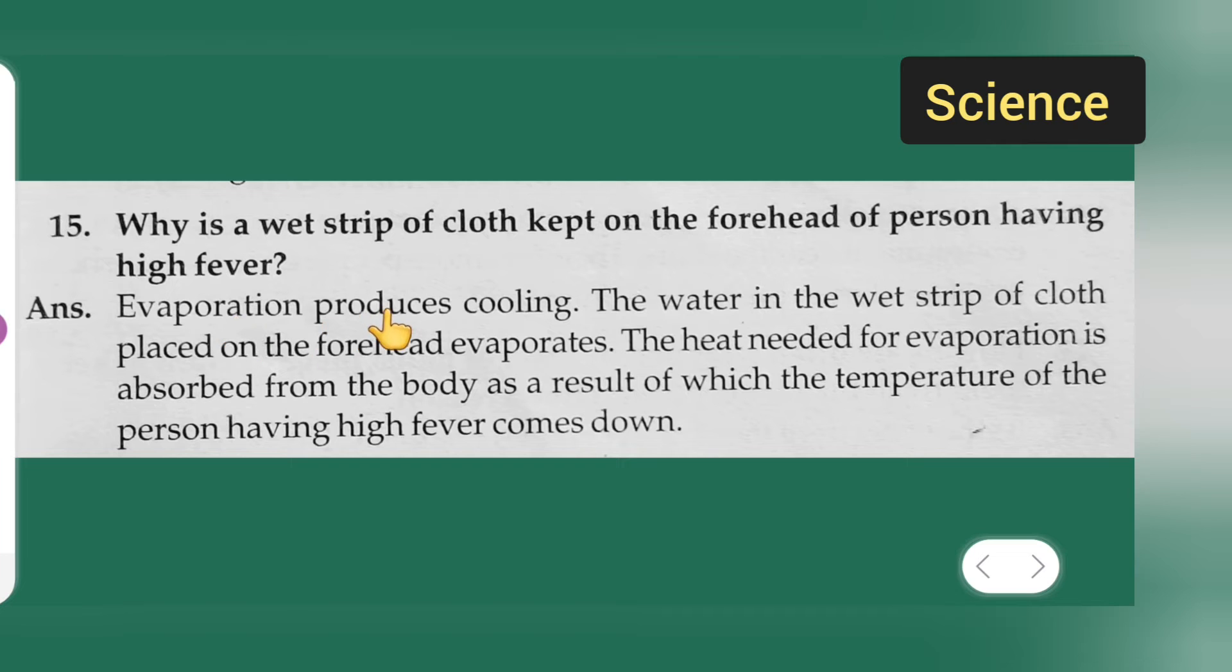Answer: Evaporation produces cooling. The water in the wet strip of cloth placed on the forehead evaporates. The heat needed for evaporation is absorbed from the body, as a result of which the temperature of the person having high fever comes down.